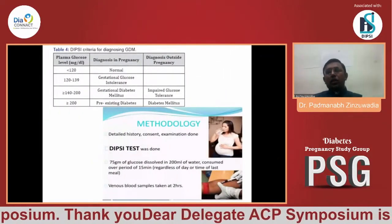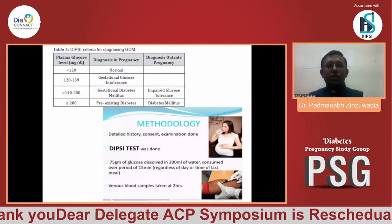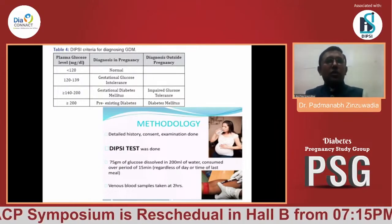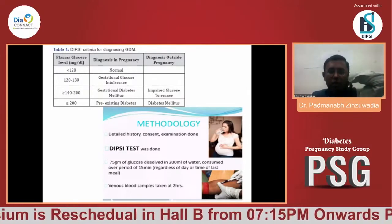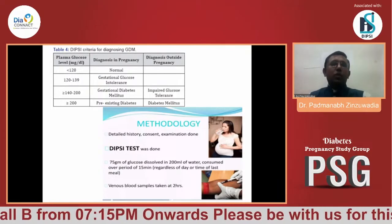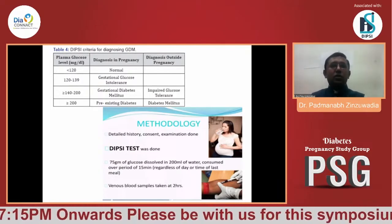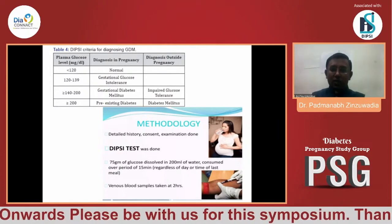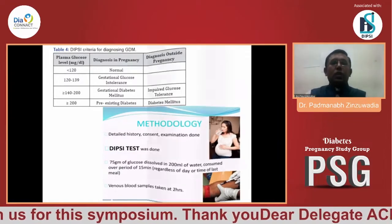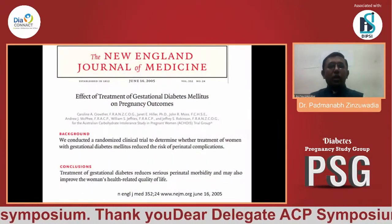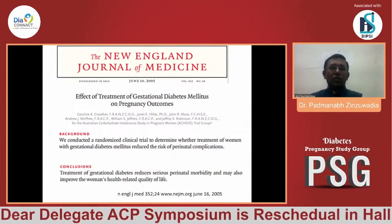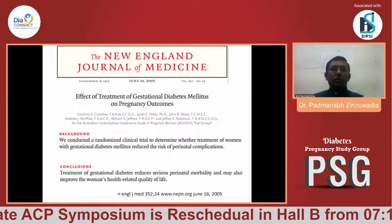Overall, if there is hyperglycemia above the normal range, the patient is going to face complications. Regarding diagnosis of GDM, in India we prefer the DIPSI test and the criteria for diagnosing GDM are well known. The important point I would like to highlight is that if hyperglycemia is associated with complications, then logically it follows that reducing hyperglycemia should lead to better outcomes.